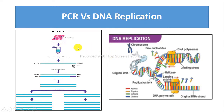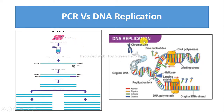The speed of DNA synthesis in PCR is 1 to 4 kilobases per minute, and the speed in DNA replication is 1 kilobase per second. This means the speed of DNA replication is greater compared to the speed of PCR.